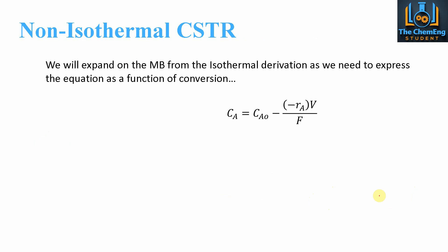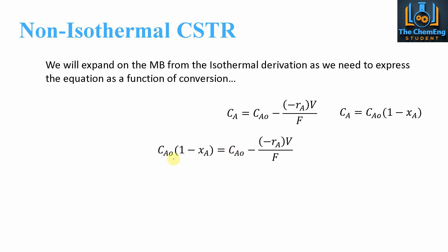For the non-isothermal CSTR, we expand on the mass balance from the isothermal derivation because we need to express the equation as a function of conversion as well. We apply the useful correlation between final and initial concentration — we can prove this using the species table, and there are tutorials linked in the description for that. Basically, the final concentration is CA = (1 − X)·CA0. We replace CA with this expression, eliminate the variable CA, collect the CA0 terms, and now have the equation in terms of conversion.